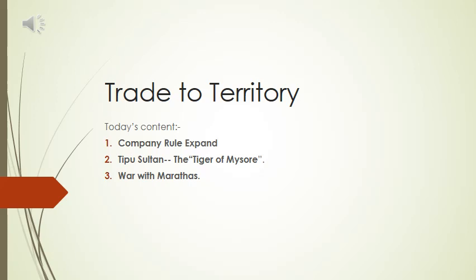Today we are going to learn about how the company rule expanded — how it became big, how they expanded to other parts of India. The second topic is Tipu Sultan. You must have heard about him; he is a very famous personality. Why was he known as the Tiger of Mysore? The third topic is the War with the Marathas. There are many movies made on the Marathas — the recent one being Tanaji. Let us learn who the Marathas were and why the British fought wars with them.